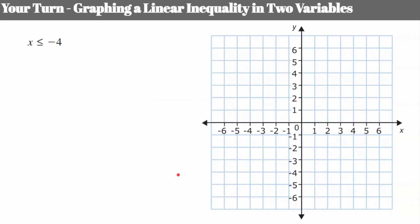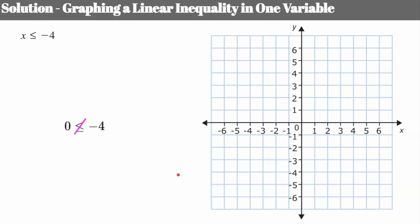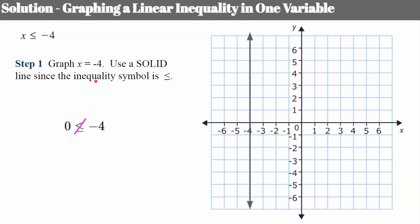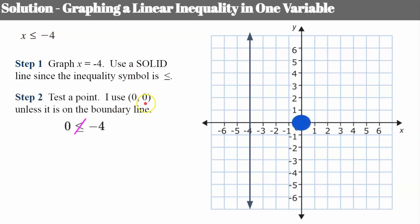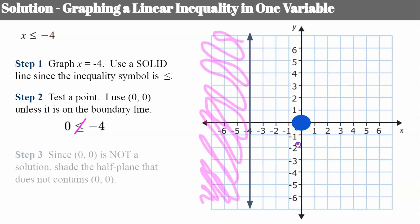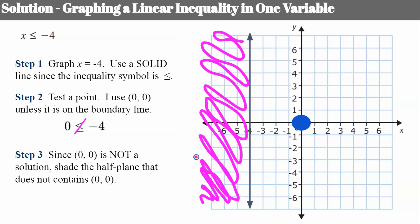Your turn — please pause, graph this inequality, and come back when you're ready. Welcome back. Step one: graph a vertical line passing through the x-axis at -4. It's a solid boundary line since it can be equal to. Test point (0, 0): 0 is not less than or equal to -4, so the origin is not part of the solution set — shade the other side of the boundary line. If you're unsure, check a second point: (-6, 0) is in the shaded area, and -6 is less than or equal to -4 — it checks out.